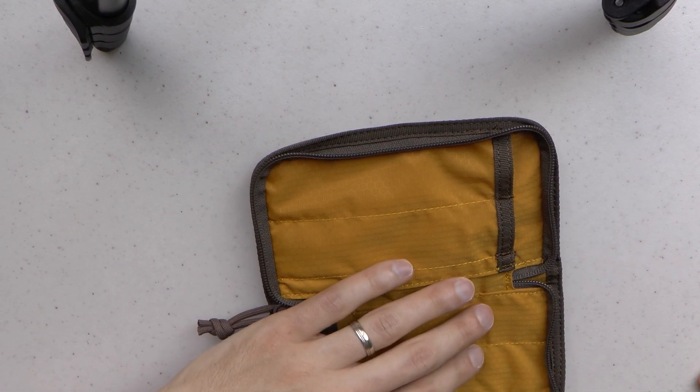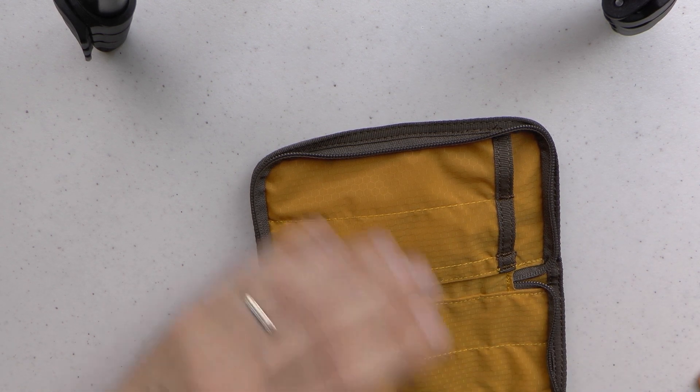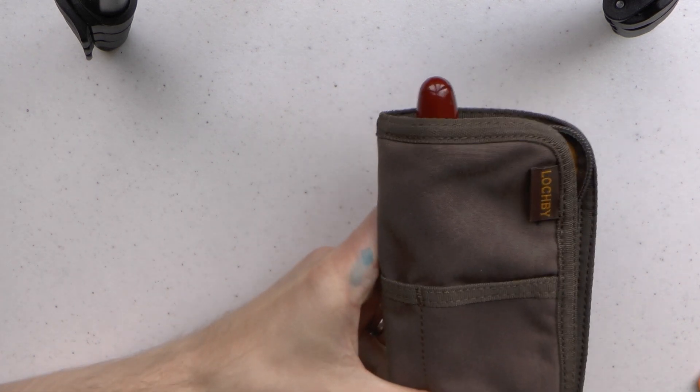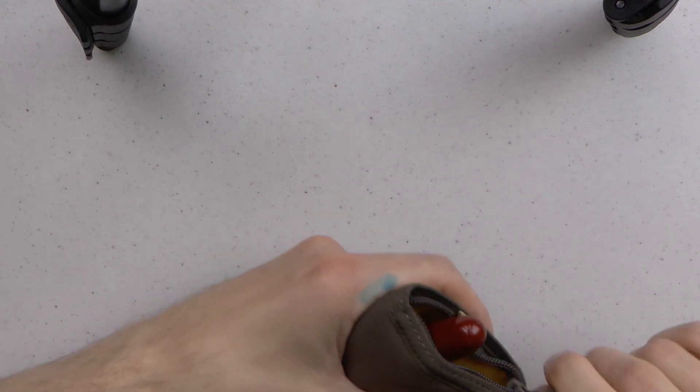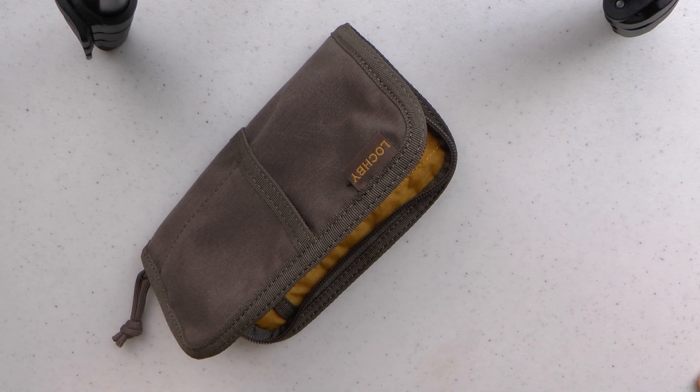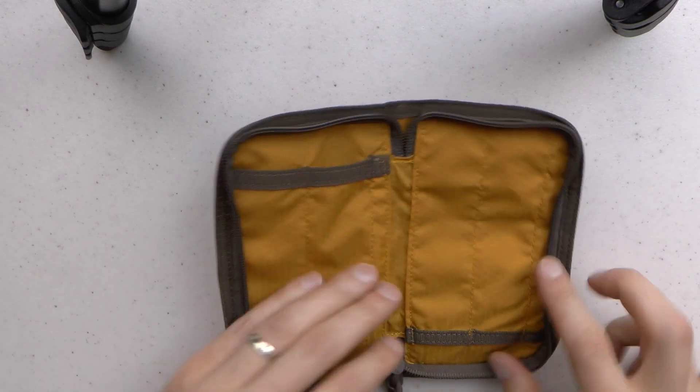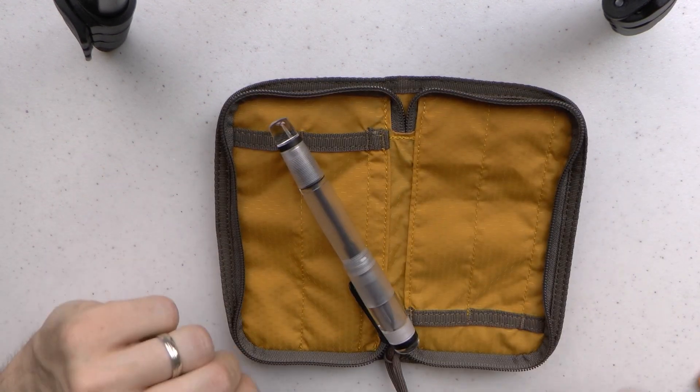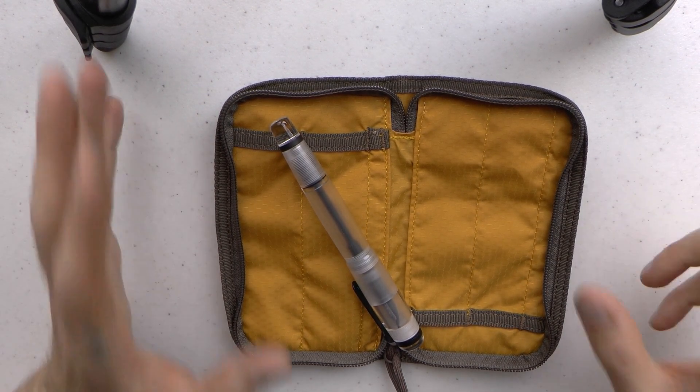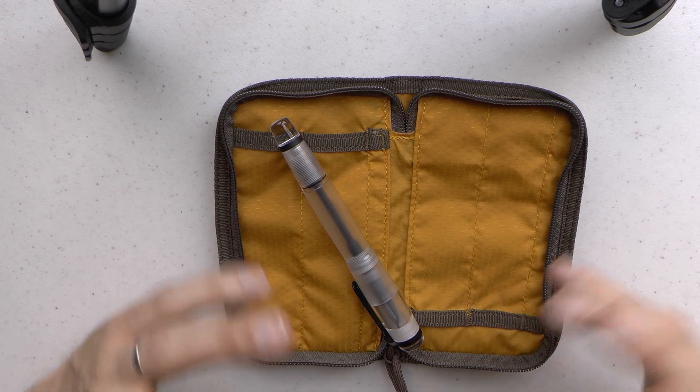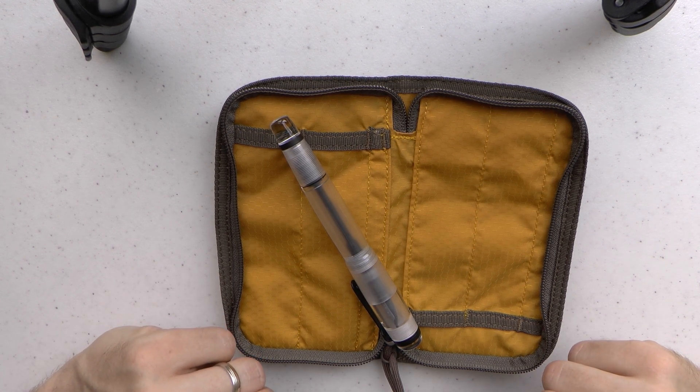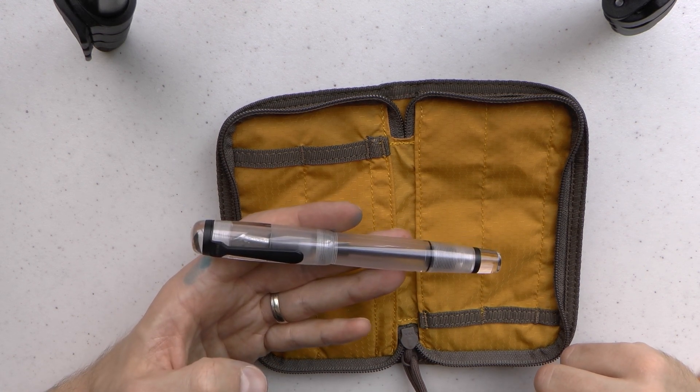Someone's going to say, what about Namiki Emperor? Namiki Emperor fits. Does it not fit? Yes it fits. I just don't think you'll be able to close it. If you're okay with carrying your Emperor this way, then you could. This is a really big pen and it fits, so if this really big pen fits then I'm assuming that a lot of other big pens of similar size will also fit. I would see no issues with an M1000, I would foresee no issues with a 149.